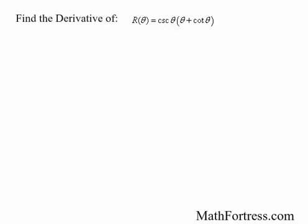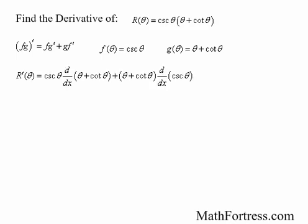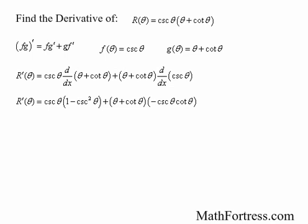Let's finish off this video with a final example. Find the derivative of r(θ) = csc(θ) · (θ + cot θ). We have a product of functions, so this is the perfect candidate for the product rule. Letting f(θ) = csc(θ) and g(θ) = θ + cot(θ), and applying the product rule, the derivative of r(θ) equals csc(θ) times the derivative of (θ + cot θ), plus (θ + cot θ) times the derivative of csc(θ). Simplifying and distributing gives us the full expanded derivative expression.